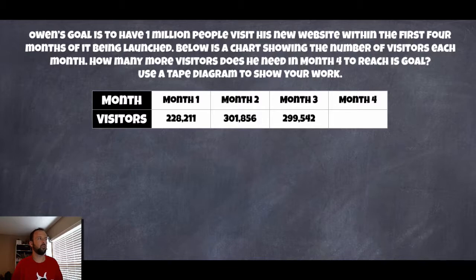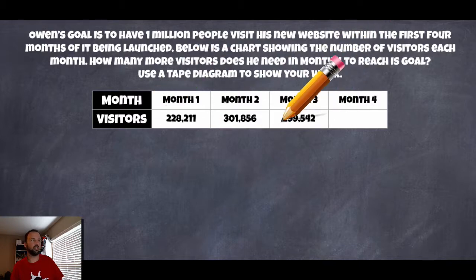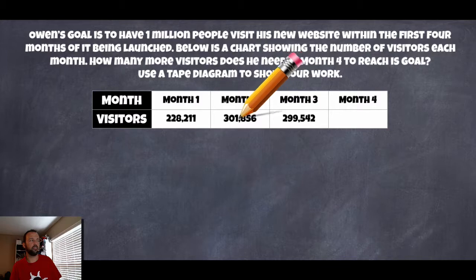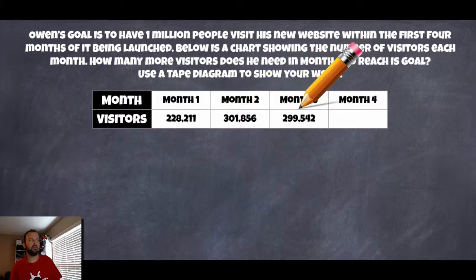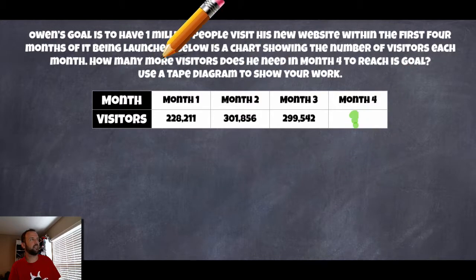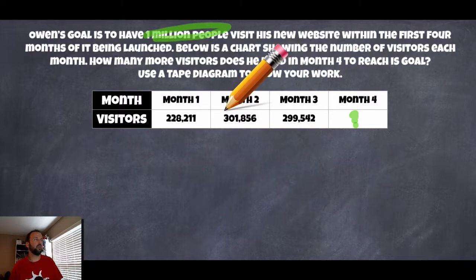Below is a chart showing the number of visitors each month. How many more visitors does he need in month four to reach his goal? And use a tape diagram to show your work. Looking at this table, we have month one through month four with visitor counts. In month one he got 228,211 visitors. In month two, 301,856 visitors. And in month three, 299,554 visitors. We want to know how many does he need in month four to make one million.